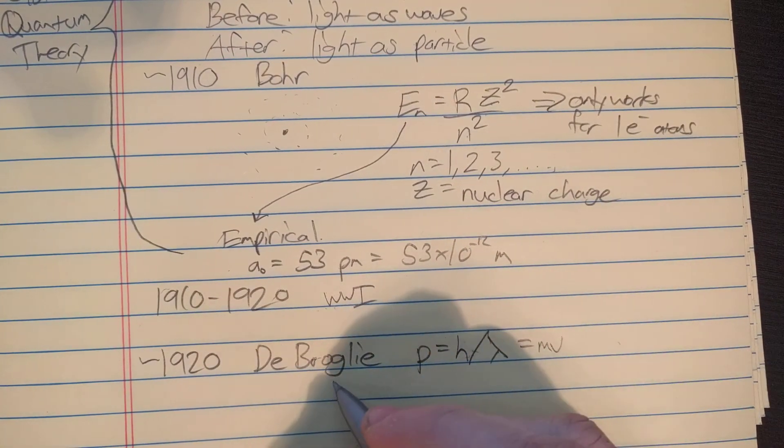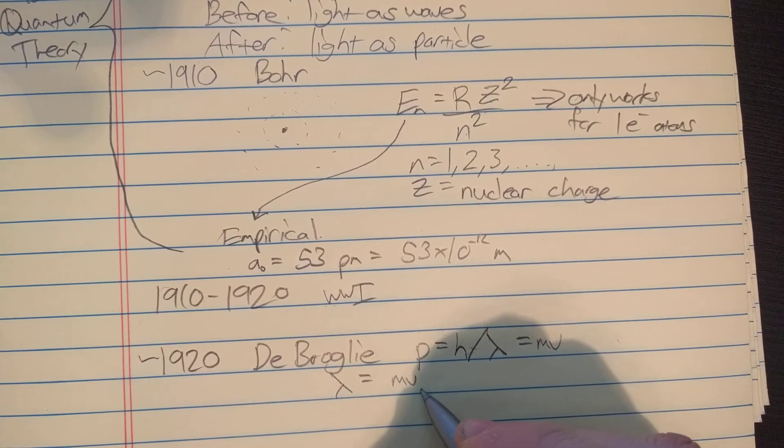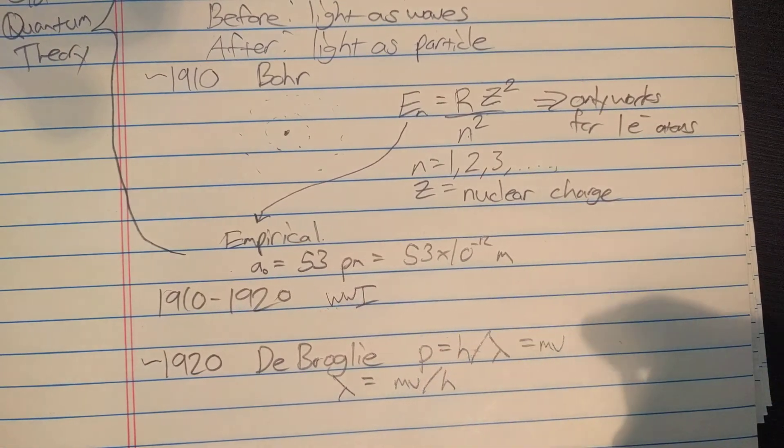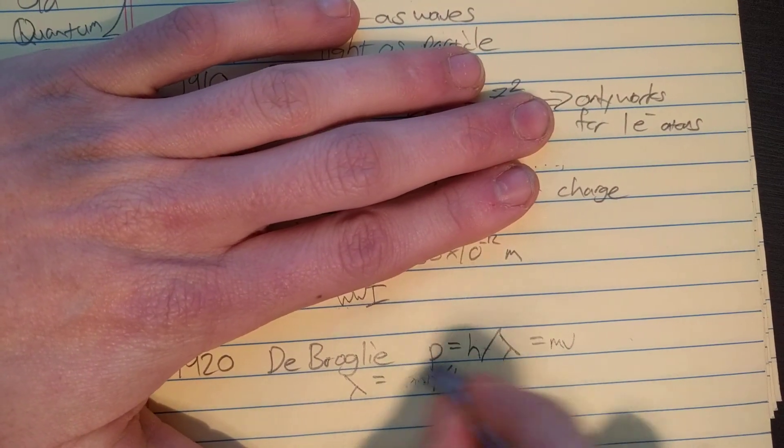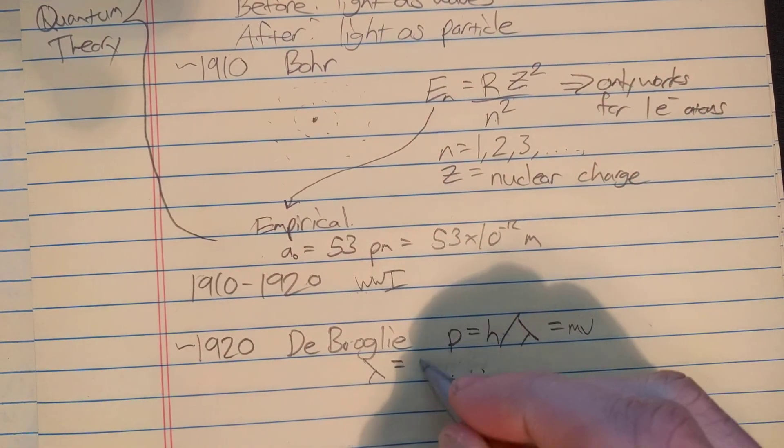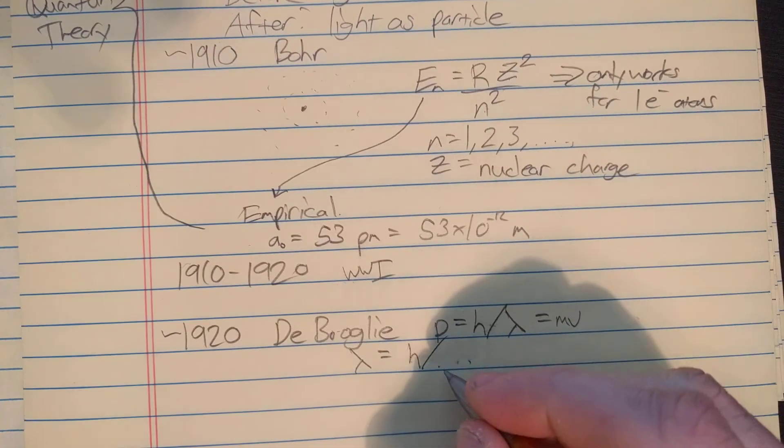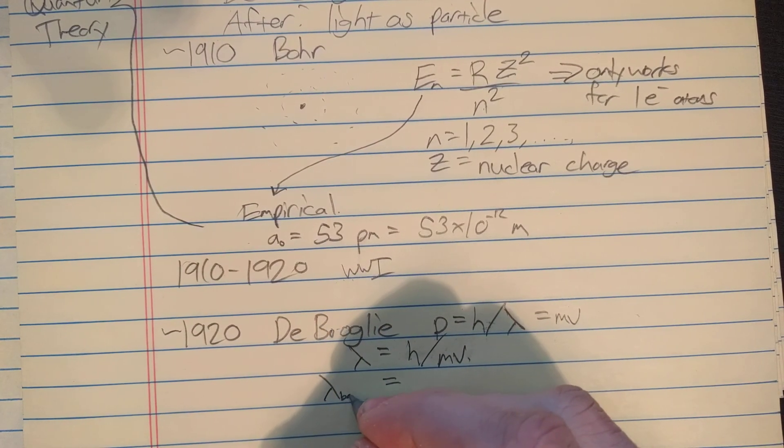Let's do that quick. If you solve for lambda here, the wavelength, you get Planck's constant divided by m times v.